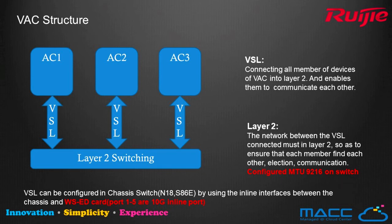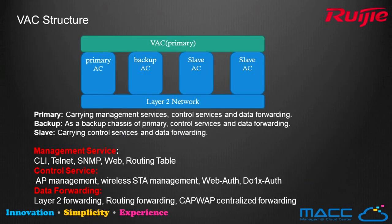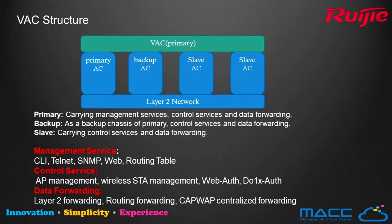The MTU of the Layer 2 switch should be configured to 9216 to allow large data frames to pass through the port. For a chassis switch like 18K or S86E, the in-line interface can be used as a VSL port directly connected to the WSD line card. In virtualization, three different roles are defined for virtual members: Primary, Backup, and Slate. Each role carries control services such as AP Management, Station Management, Web Authentication, 802.1X Authentication, and Data Forwarding, including Layer 2 Forwarding, Routing Forwarding, and CAPWAP Centralized Forwarding. System management tasks are handled by the primary controller, and the backup controller serves as a backup chassis, enabling fast switchover even when one virtual member goes down.